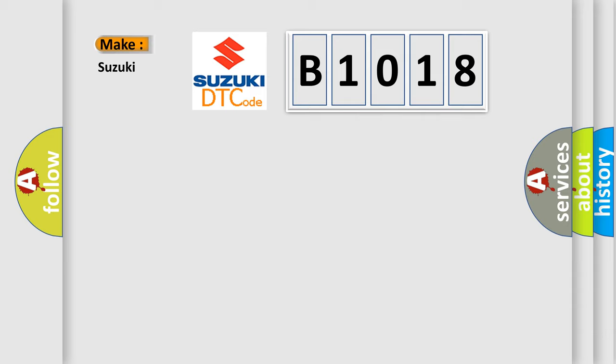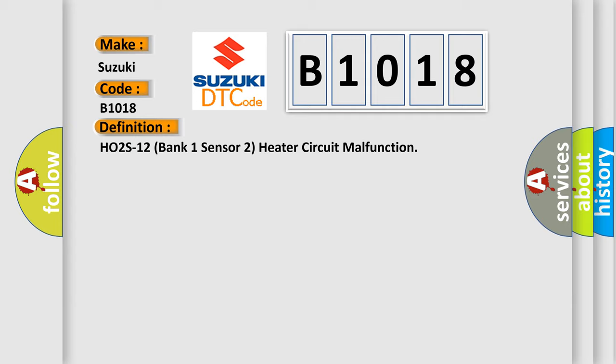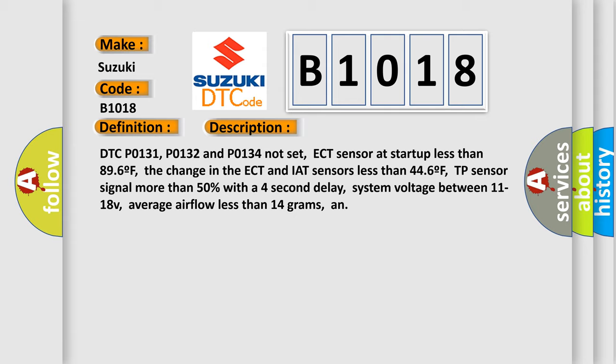What does the diagnostic trouble code B1018 interpret specifically? For Suzuki, the basic definition is: HO2S12 bank 1 sensor 2 heater circuit malfunction. Here is a short description of this DTC code: DTC P0131, P0132, and P0134 not set. ECT sensor at start-up less than 89°F. The change in the ECT and IAT sensors less than 44°F. TP sensor signal more than 50% with a 4-second delay. System voltage between 11 to 18V. Average airflow less than 14 grams. This diagnostic error occurs most often in these cases.